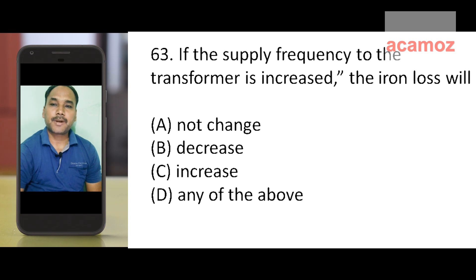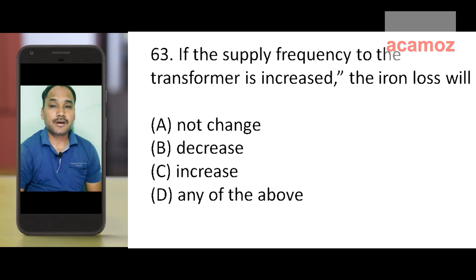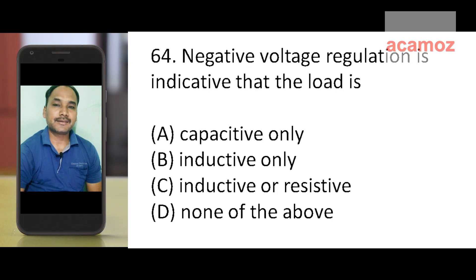Next question: if the supply frequency to the transformer is increased, the iron loss will — options: not change, decrease, increase, or any of the above. If the supply frequency increases, then iron loss will also increase. So the correct answer is option C: increase. When the frequency increases, the iron loss will also increase.